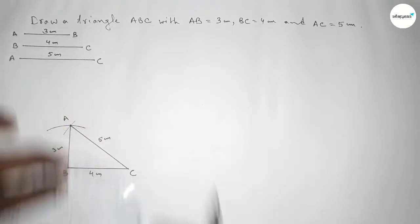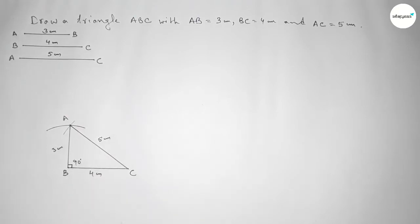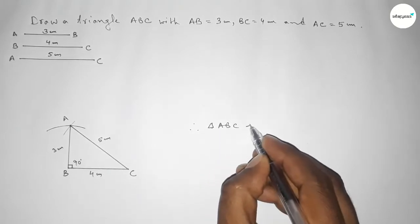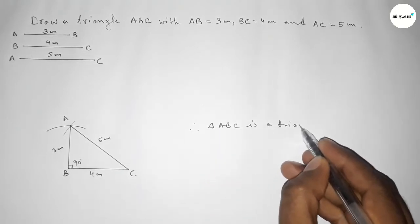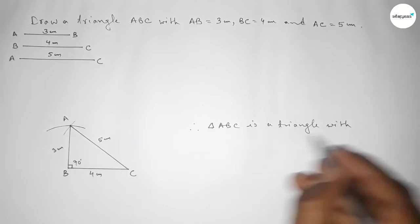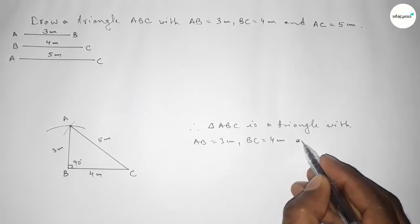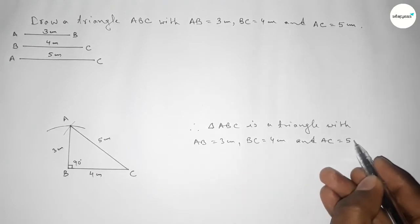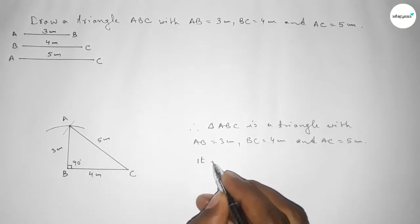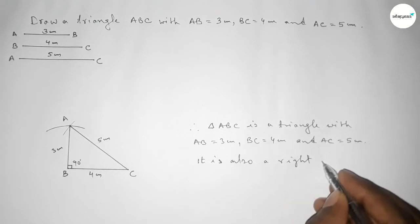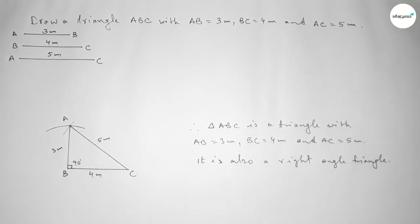Now checking the angle — this is 90 degrees. Therefore triangle ABC has AB equal to 3 centimeters, BC equal to 4 centimeters, and AC equal to 5 centimeters. It is also a right angle triangle with angle B equal to 90 degrees. That's all — thanks for watching. If this video is helpful to you, please share it.